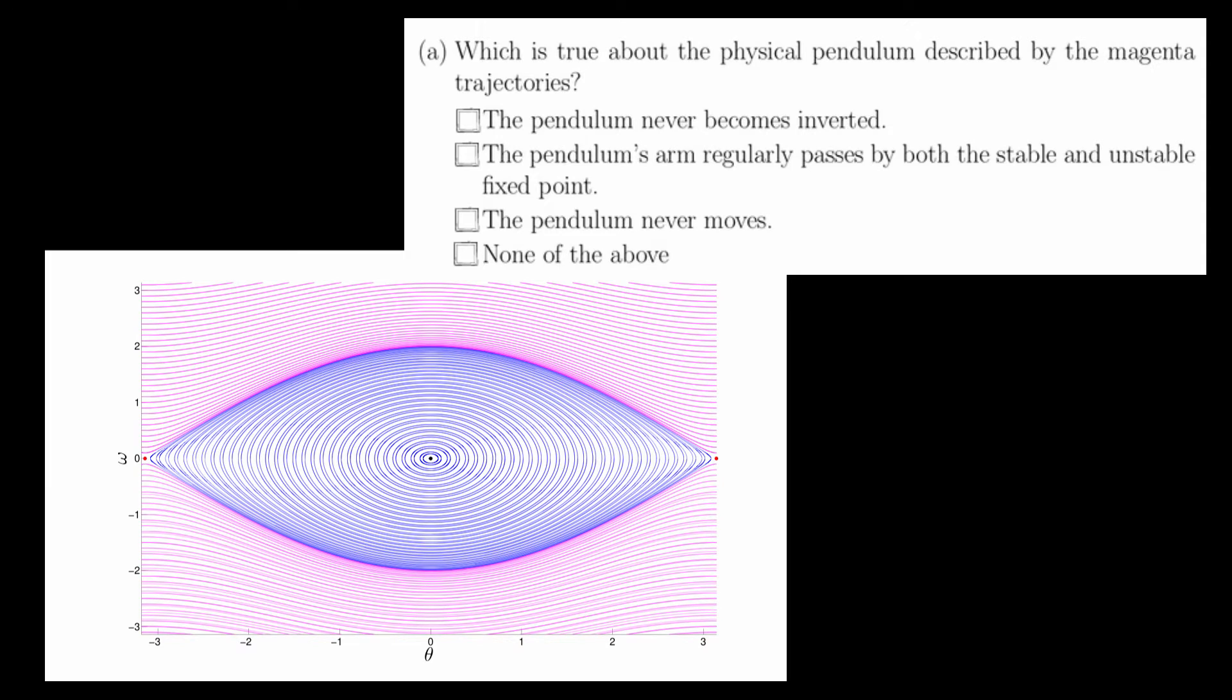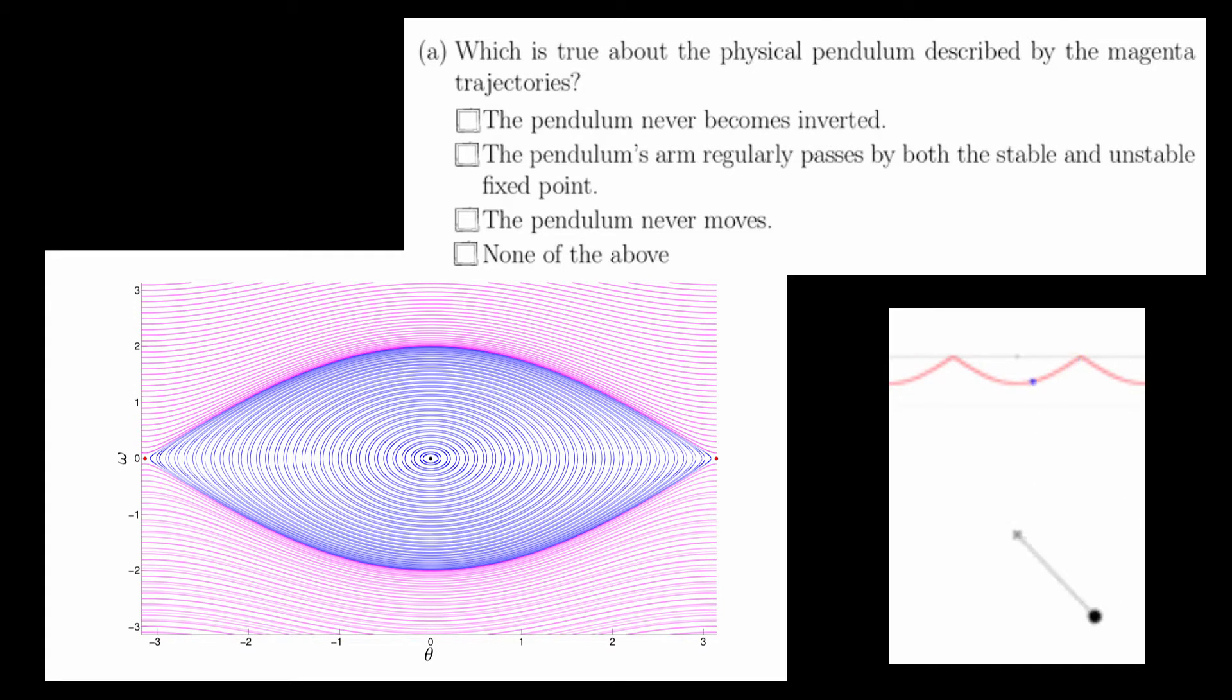Question 1a asks us to relate a physical pendulum's motion to the magenta trajectories. For each of these, I will provide a GIF which illustrates a physical pendulum and a trajectory in phase space. But I'll answer the question using the phase space portrait so that you can get familiar with this powerful representation.